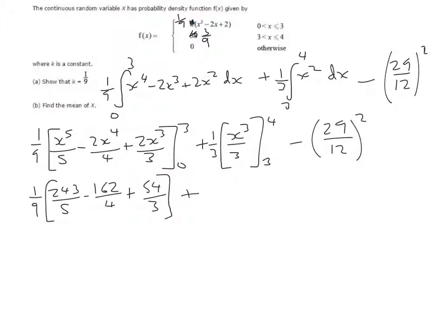And then on the second one, we've got a third times 64 over 3 minus 27 over 3.